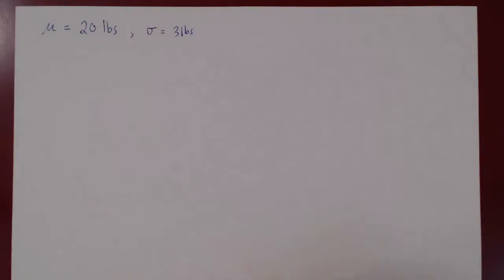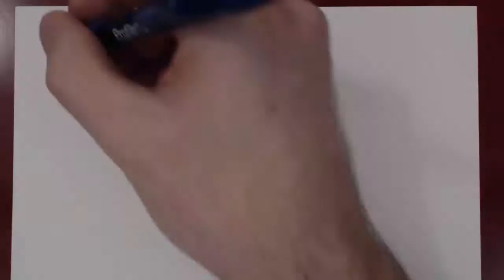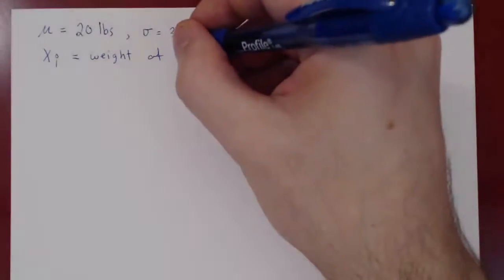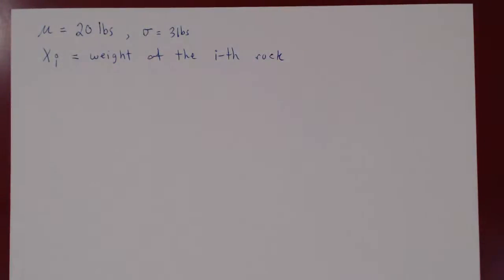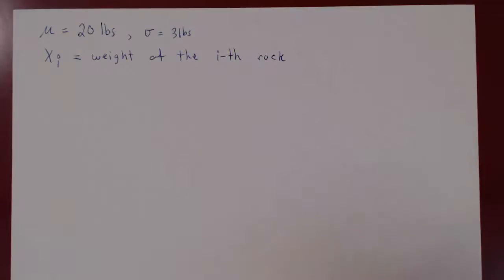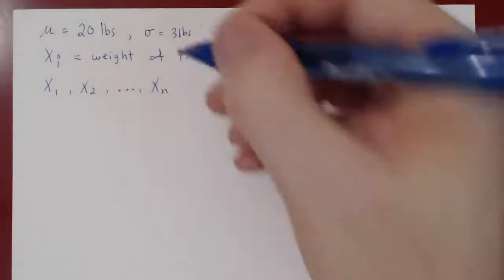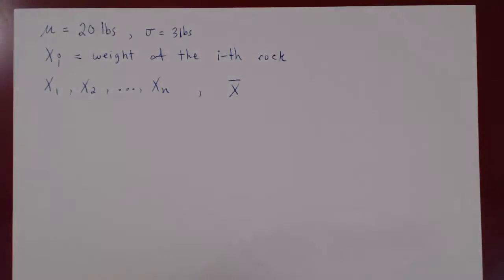What if we say we take a sample of n rocks and we compute their average? So we could write x_i, where i can be the first, second, and so on rock. So x_i will be the weight of the i-th rock. So we pick a rock, we weigh it, so we find its weight — x1 is the weight of the first rock, x2 the weight of the second, x3 the weight of the third, and so forth. Suppose we sample n rocks, so we have the weight of the first through the n-th rock. And suppose we're computing the average weight of our sample.